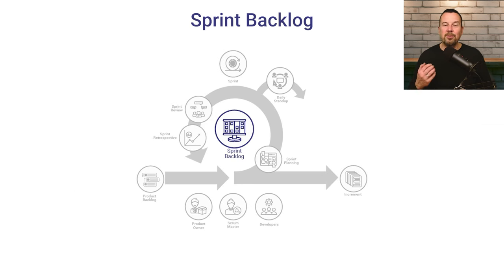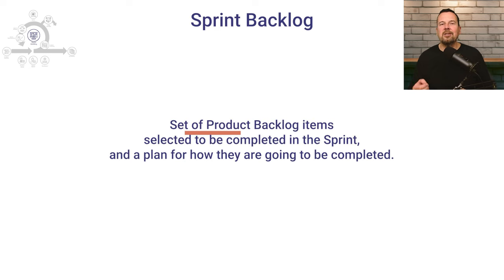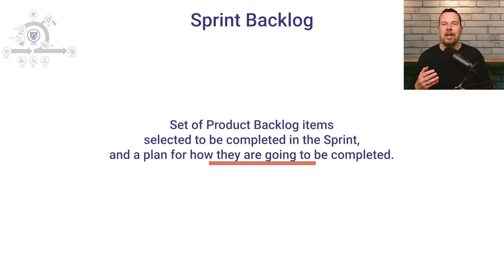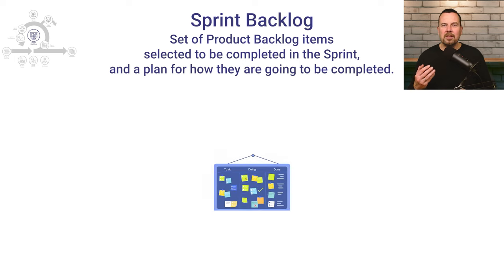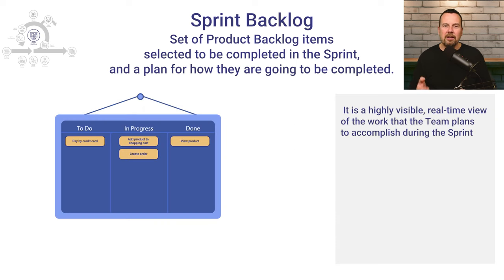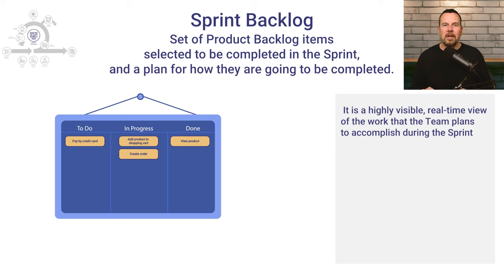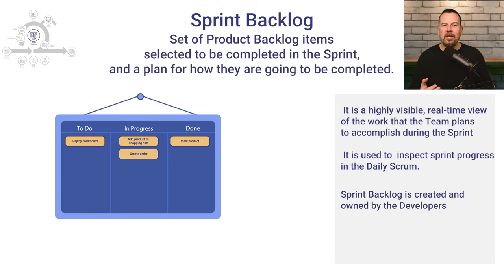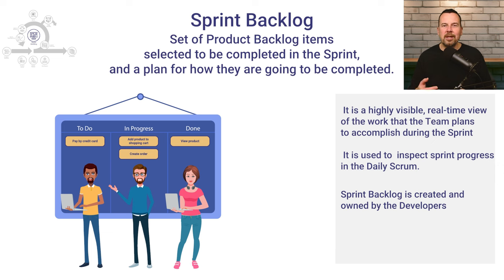The next artifact is the sprint backlog. The sprint backlog is a set of product backlog items selected to be completed in a single sprint, plus a plan for how they are going to be completed. It makes visible all the work that the development team plans to complete to meet the sprint goal. It is a highly visible, real-time picture of the work that the development team plans to accomplish during the sprint. Sprint backlog changes as work progresses and is used to inspect sprint progress in the daily scrum.